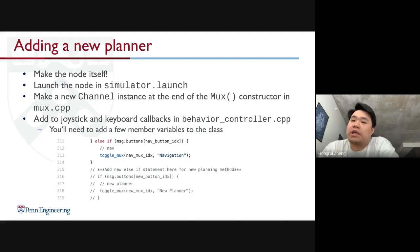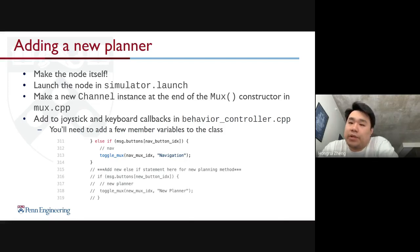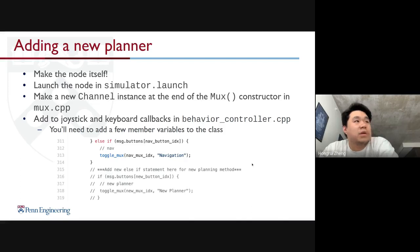You can do that by making a new channel instance at the end of the Mux constructor in mux.cpp — this lets the multiplexer know that you have a new channel. Next, you'll need to add joystick and keyboard callbacks in behaviorcontroller.cpp and add a few member variables to the class. There are comments in the code on how to do this.